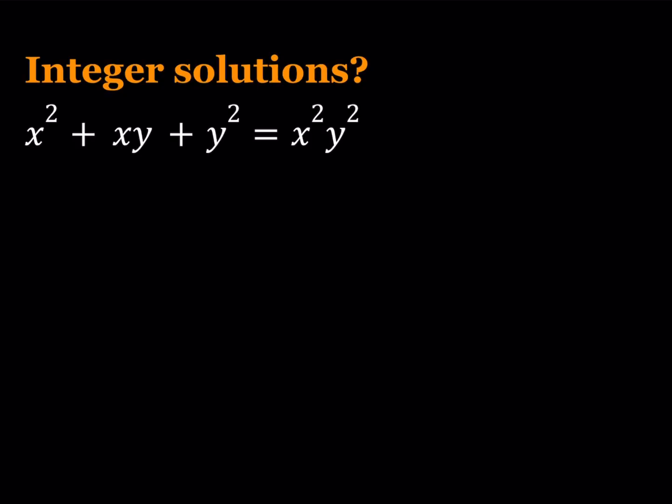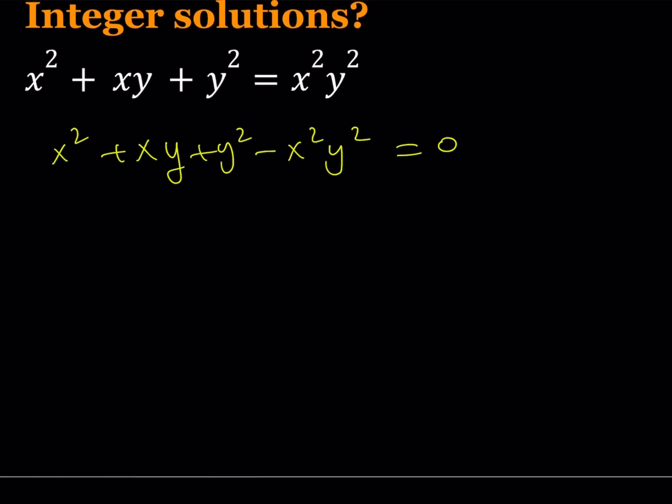Let's go ahead and put everything on the same side. We get x squared plus xy plus y squared minus x squared y squared equals zero. My goal is to turn this into a quadratic equation. I have x squared and negative x squared y squared, so I'm going to factor out x squared. Write this as 1 minus y squared times x squared, plus y times x plus y squared equals zero.